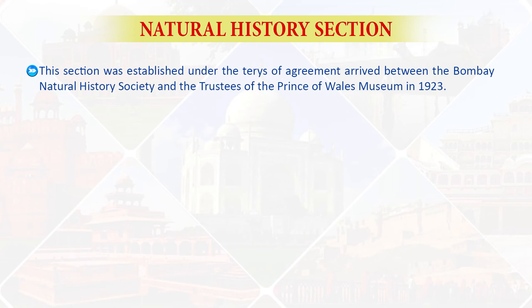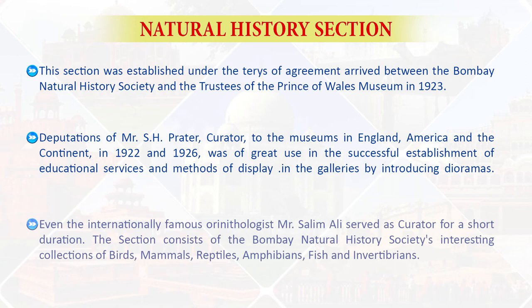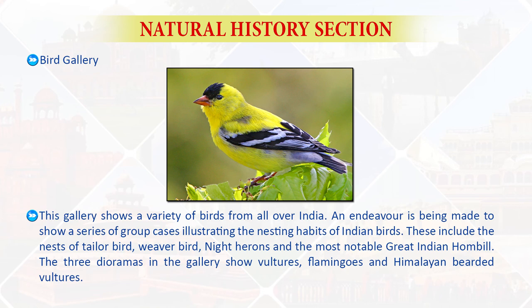Next is the natural history section, established under a terms of agreement between the Bombay Natural History Society and the trustees of the Prince of Wales Museum in 1923. A deputation of Mr. S.H. Prater, curator, to museums in England, America, and the continent in 1922–26 was of great use in establishing educational display methods by introducing dioramas. Even the internationally famous ornithologist Mr. Salim Ali served as curator for a short duration. The section consists of the Bombay Natural History Society's interesting collections of birds, mammals, reptiles, amphibians, fish, and invertebrates.